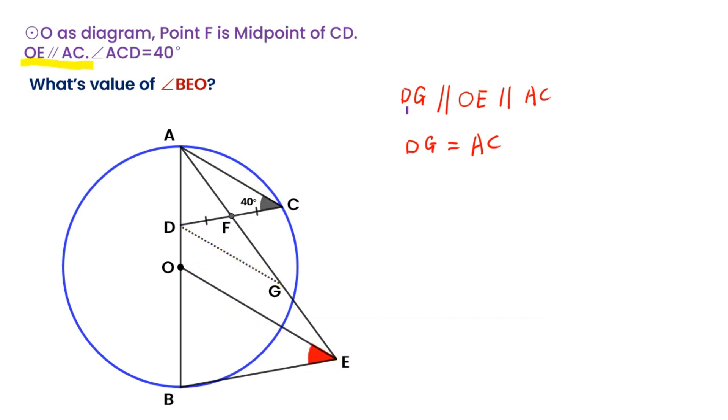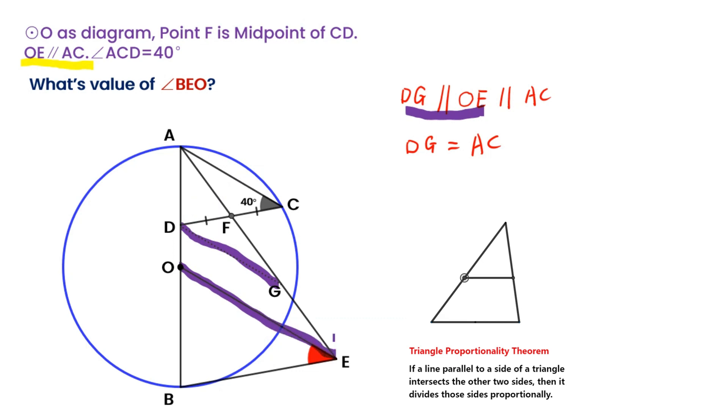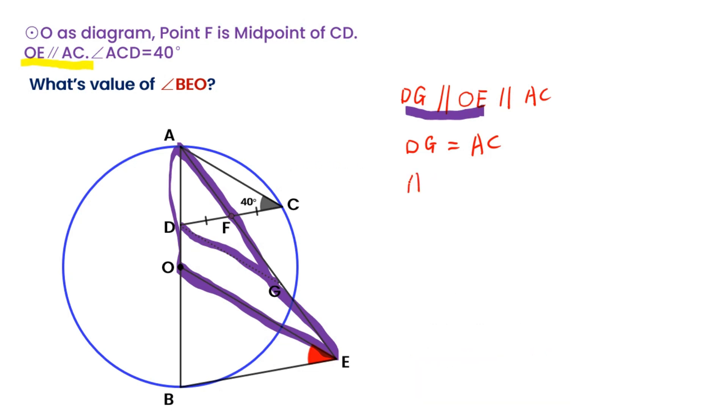From DG parallel to OE and the triangle proportion theorem, in triangle AOE we can get the equation: AD over DG equals OA over OE.